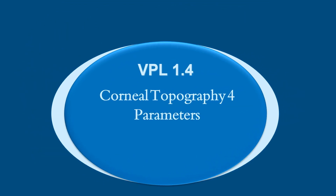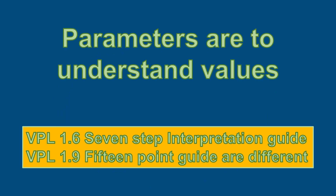In this video, we'll talk about the parameters of the corneal topography. Remember, the parameters are to understand the values on the printouts. The actual interpretation guides are VPL 1.6 and 1.9. VPL 1.6 is the detailed 7-step interpretation guide and 1.9 is the quick 15-point guide.